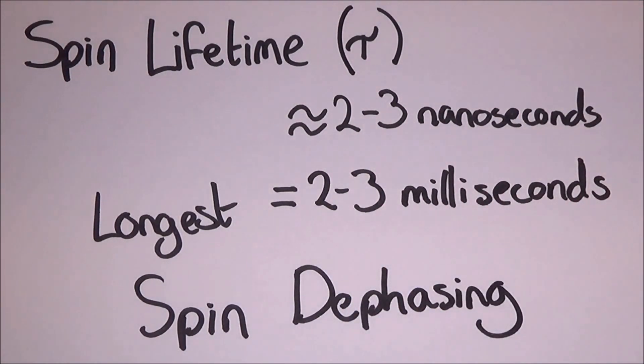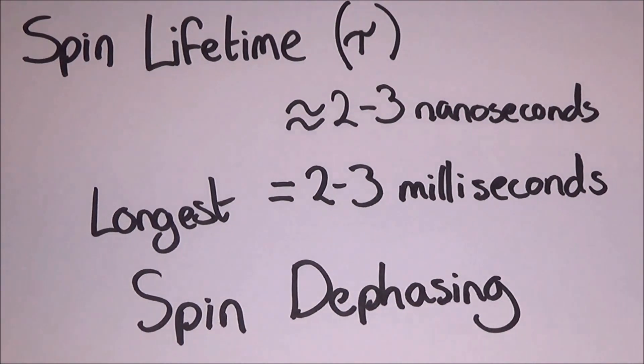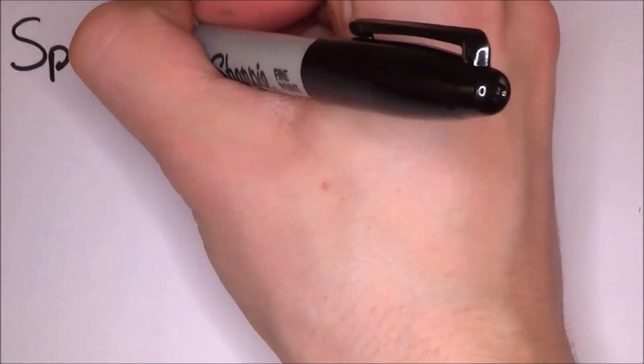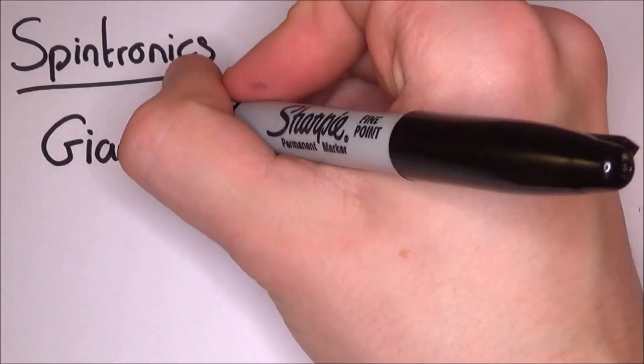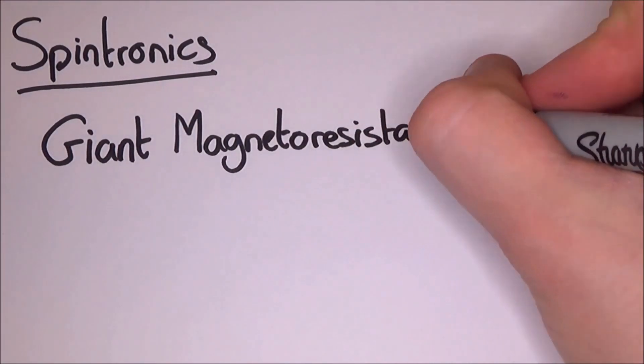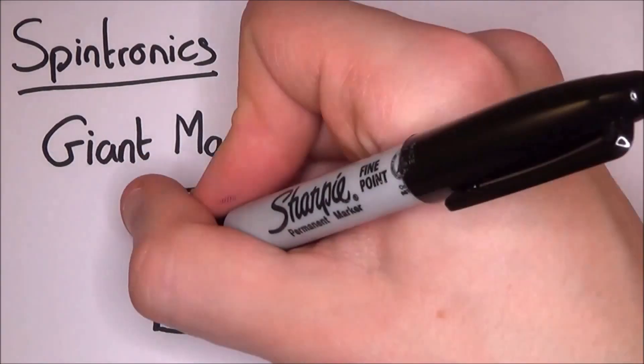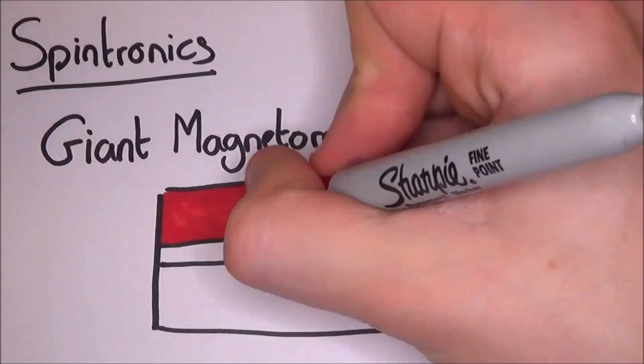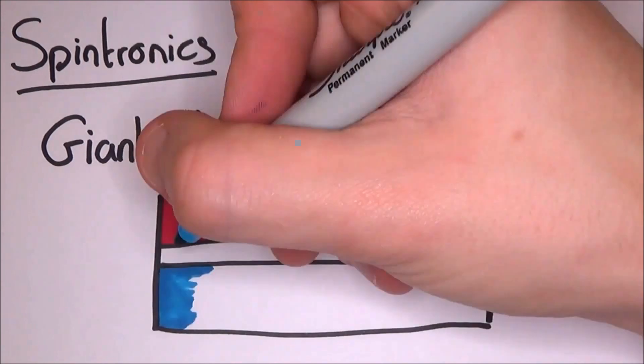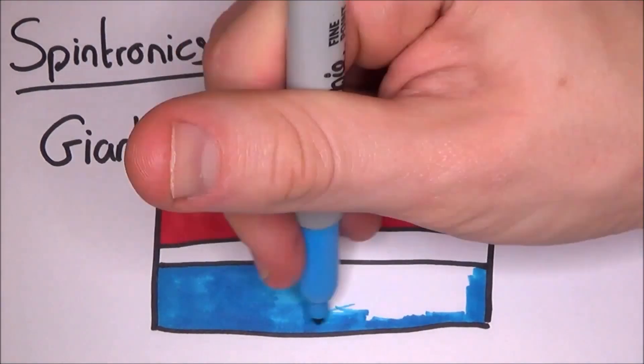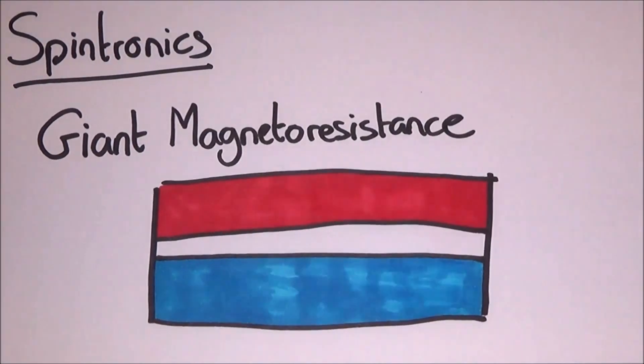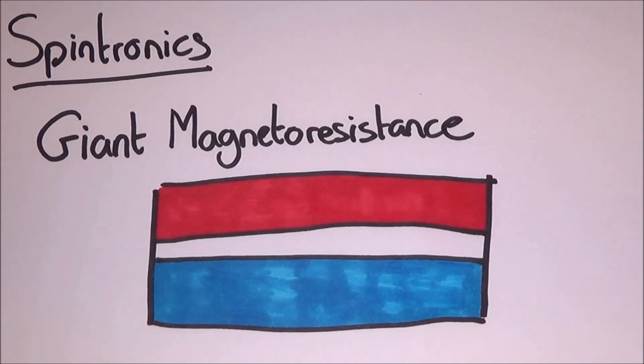Something comes up a lot in spintronics is a giant magnetoresistance or GMR devices. Don't get confused though, there is nothing giant about it. It is effectively seen as a very thin layer of conductor. GMR has an impact when conductors are just a few nanometers thick and is sandwiched between two other layers.